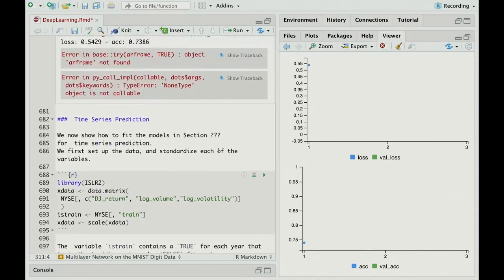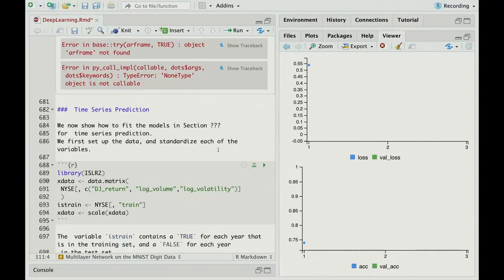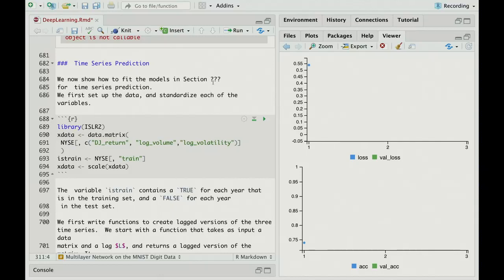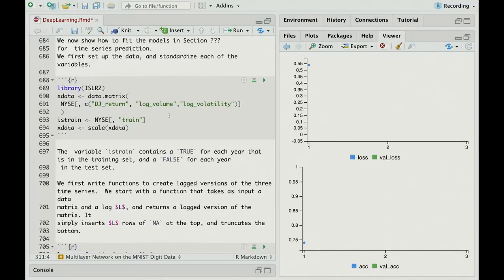Well, we're nearing the end. The last topic is time series prediction. So I see the section numbers didn't appear yet, but we can fix that. But this is the New York Stock Exchange, where, recall, we had the sequence for the Dow Jones return, the log volume, and log volatility for a number of years.